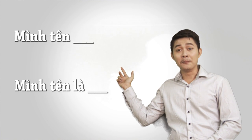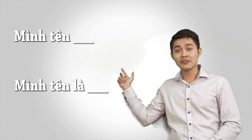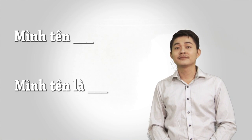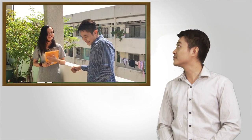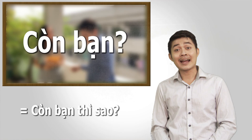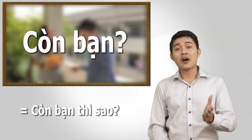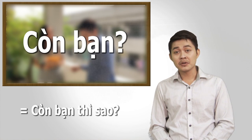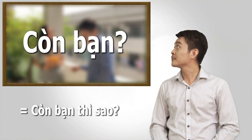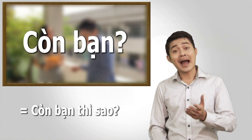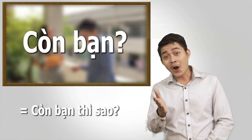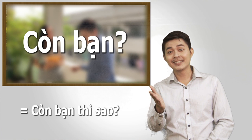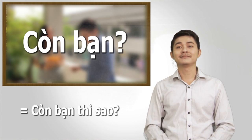Mình tên An. Còn bạn thì sao? Còn bạn means 'and you?' in English. Okay, repeat: Còn bạn. Còn bạn. Good.